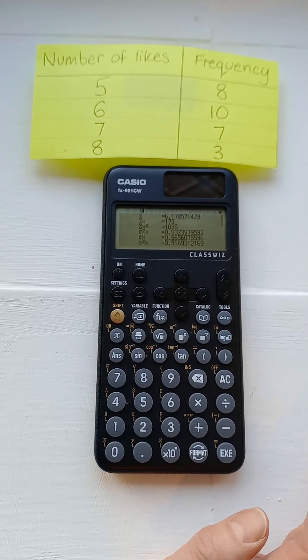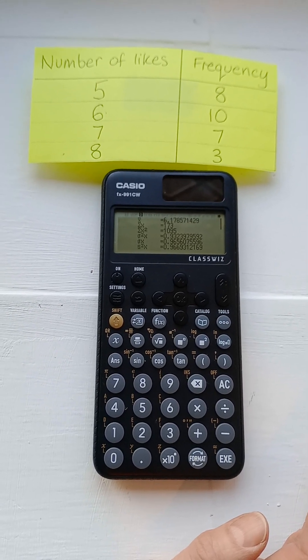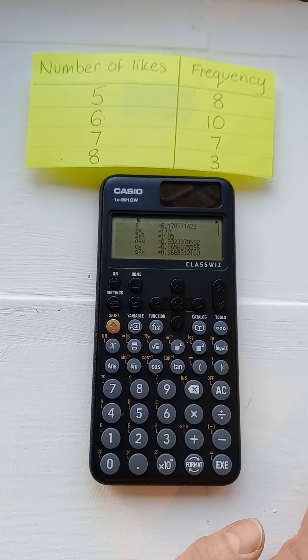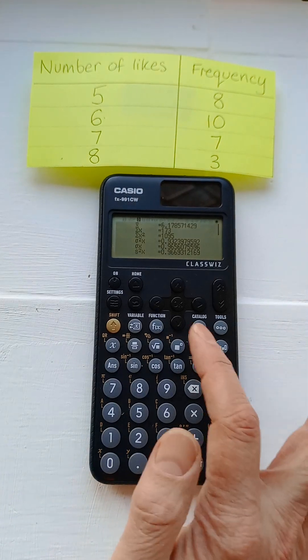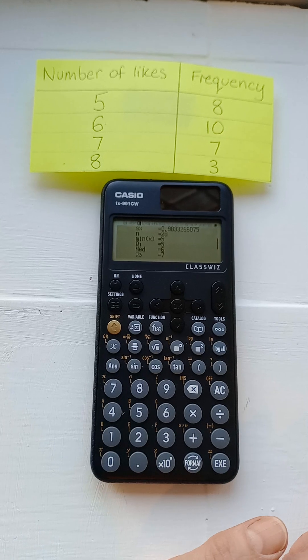On this list, X bar is mean, Sigma X is standard deviation, Sigma squared X is the variance, Q1 is the lower quartile, Med is the median. So that's where you get those ones on the second screen.